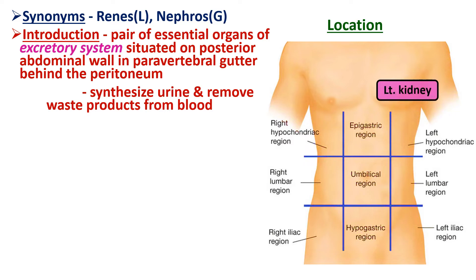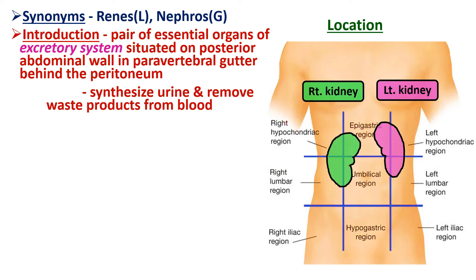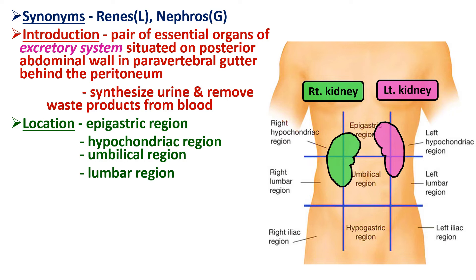If we draw the outline of the left kidney and the right kidney, it is very clear that kidneys occupy four quadrants of the abdomen: the epigastric region, hypochondriac region, umbilical region, and lumbar region. Regarding vertebral level, kidneys extend from the twelfth thoracic vertebra to the level of the third lumbar vertebra.